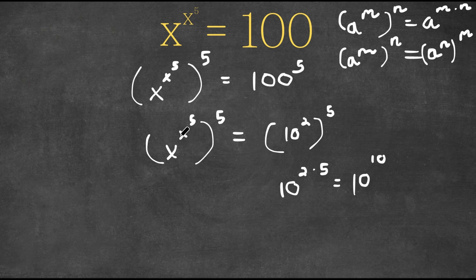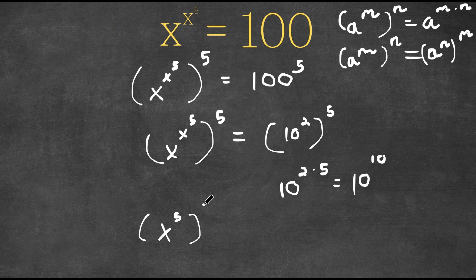So in this case, I'm going to switch the places of x to the power of 5 and 5. So now we would have x to the power of 5, to the power of x to the power of 5, is equal to 10 to the power of 10.